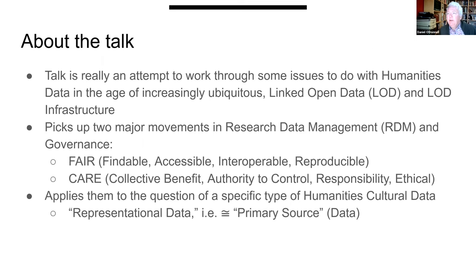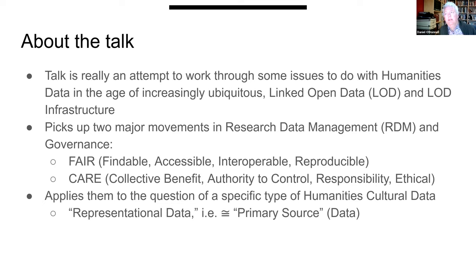The talk is really an attempt on my part to work through some issues to do with humanities data in an age of increasingly ubiquitous linked open data and linked open data infrastructure — a movement I think is as important as the rise of ubiquitous computing was 15 years ago. It picks up the two major strands of research data management and governance: FAIR — findable, accessible, interoperable, and reproducible — and CARE — collective benefit, authority to control, responsibility, and ethics. It applies into a question of a specific type of humanities cultural data, something we're working on in a new project called Good Things.